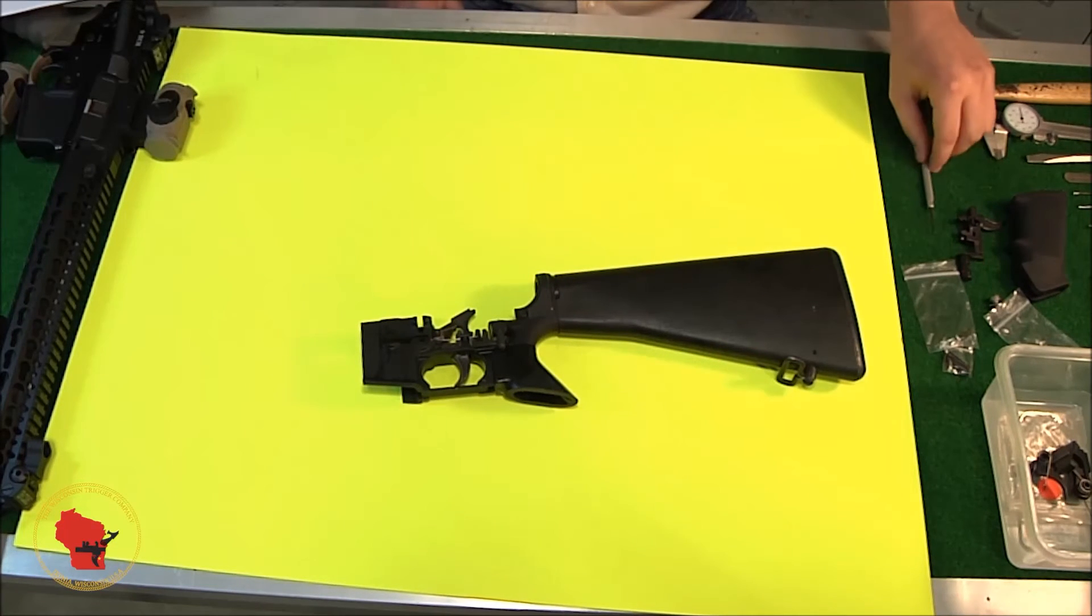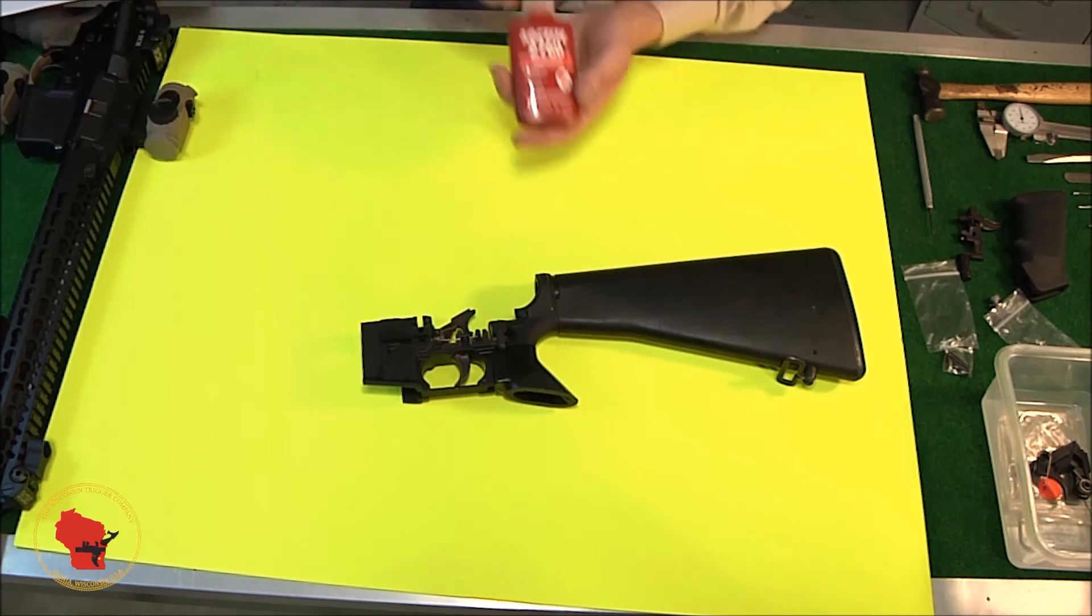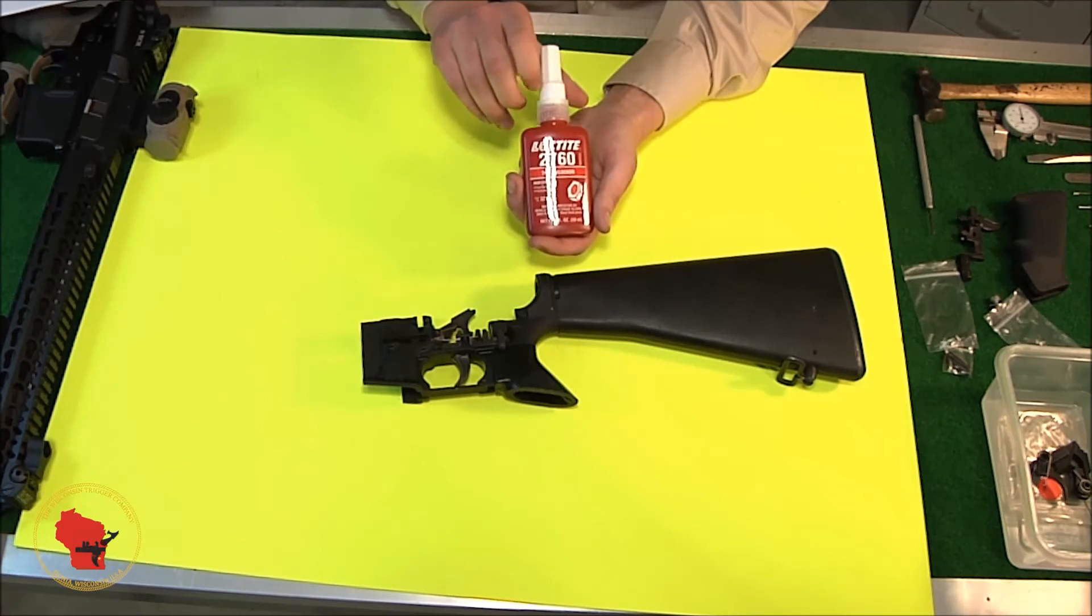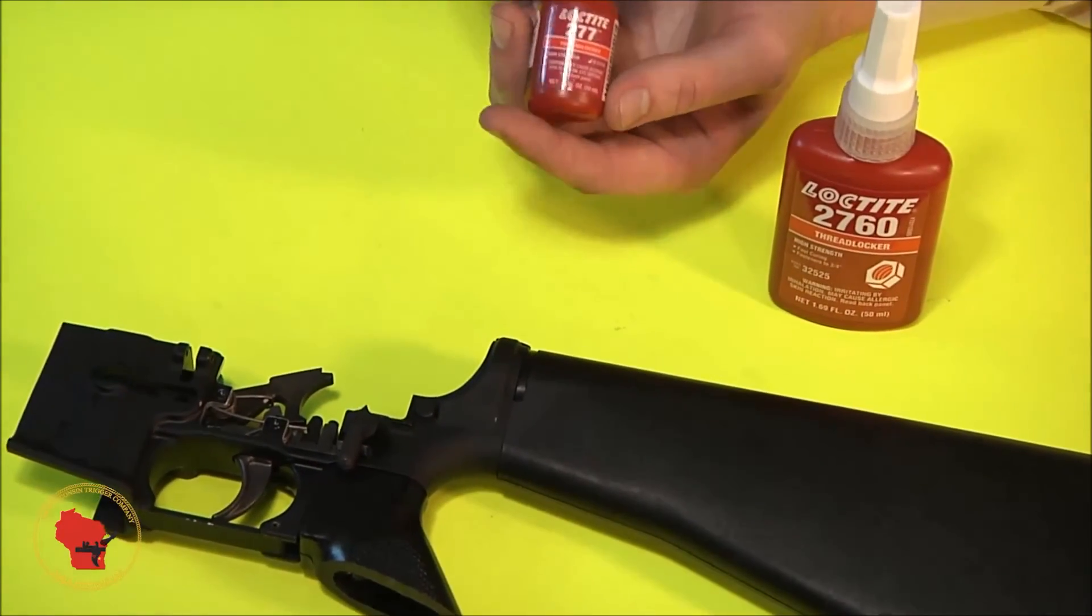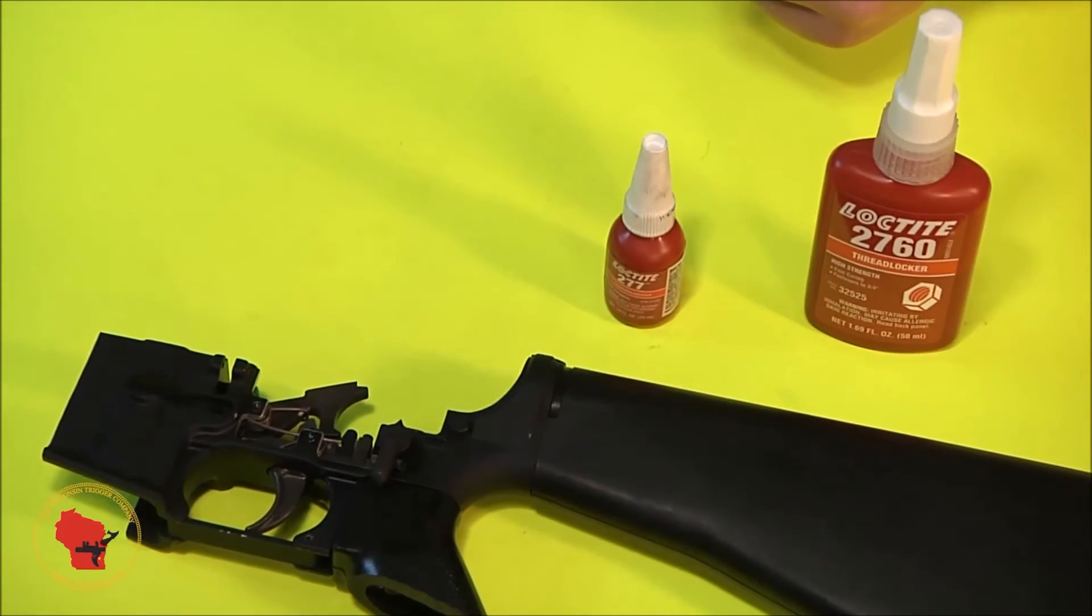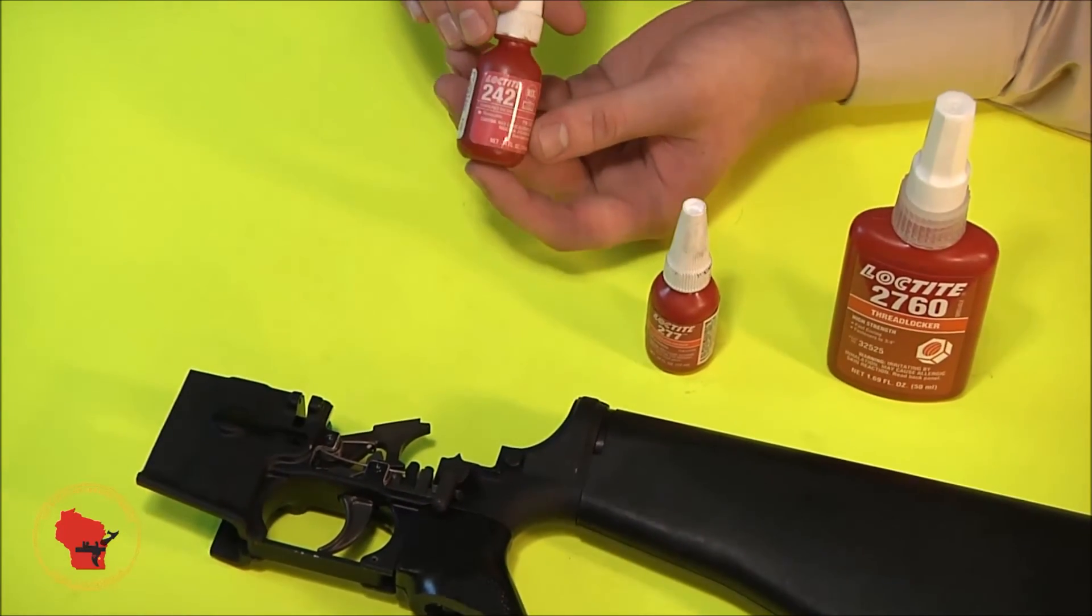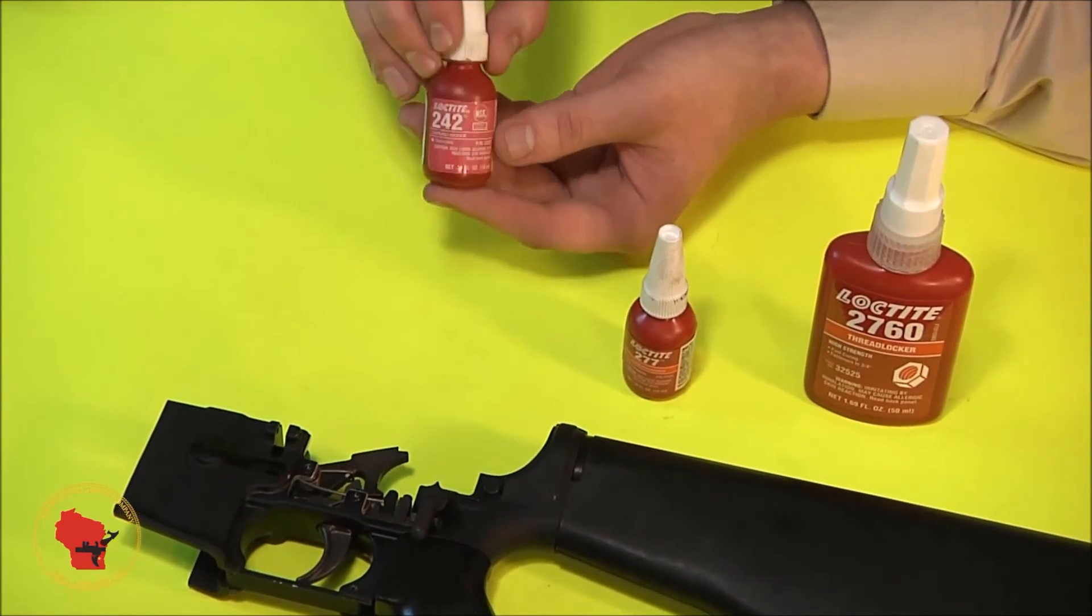Now that you've got that set, you're going to want to go back to your Loctite. We recommend 2760 here. You can also use red Loctite, 277, or if you have it, blue 242. However, it will not stand up to heat as well.